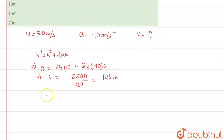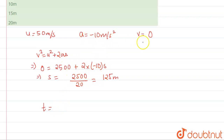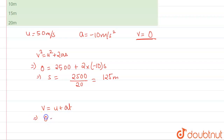Now we find time T. Using V = U + AT with V = 0, U = 50, and A = −10: 0 = 50 − 10T. So T comes out to be 5 seconds. That means in 5 seconds the object reaches the maximum height.